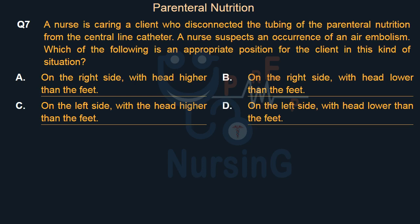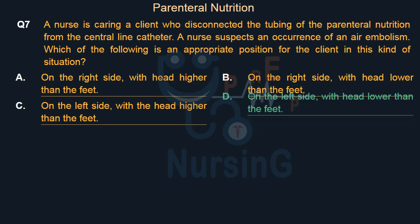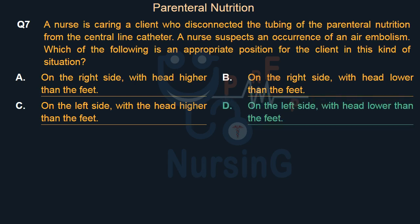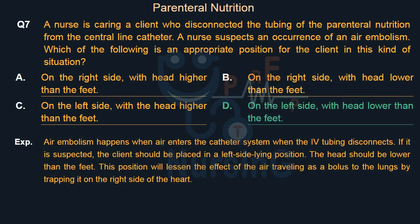Right answer is Option D: On the left side, with head lower than the feet. Air embolism happens when air enters the catheter system when the tubing disconnects. If it is suspected, the client should be placed in a left side-lying position with the head lower than the feet. This position will lessen the effect of the air traveling as a bolus to the lungs by trapping it on the right side of the heart.